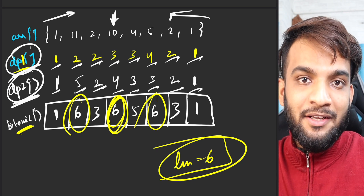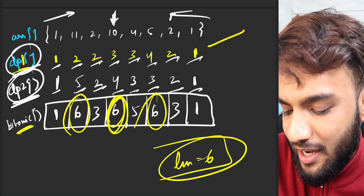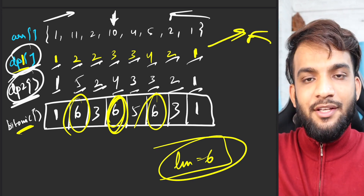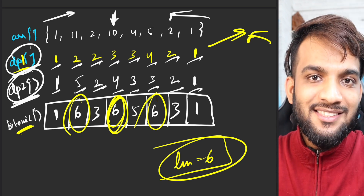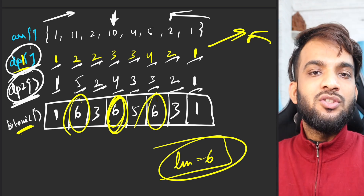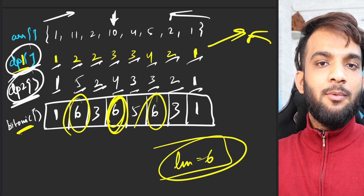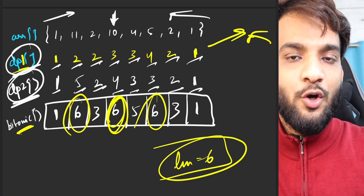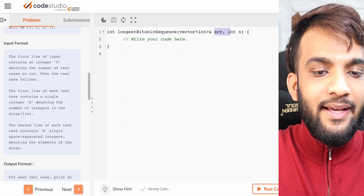So as simple as that — if you compute the LIS from the front, the LIS from the back, and combine them with dp1[i] + dp2[i] - 1, you get your bitonic length. That is how you can easily use LIS to solve this problem. Let's get started with the code.